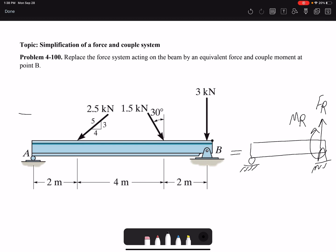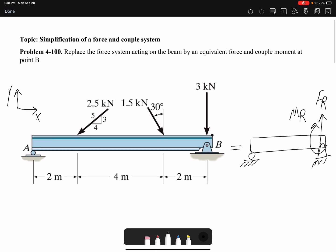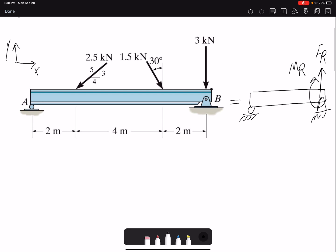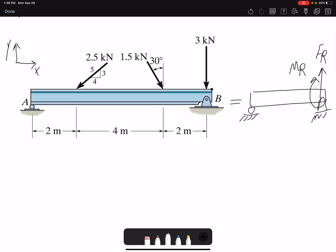Because we don't have any coordinate, I'm just going to draw a typical coordinate system x, y. So for these two beams to be equivalent, the summation of forces in the beam on the right and on the beam on the left should be the same. Summation of the moment about point B also should be the same in both beams.